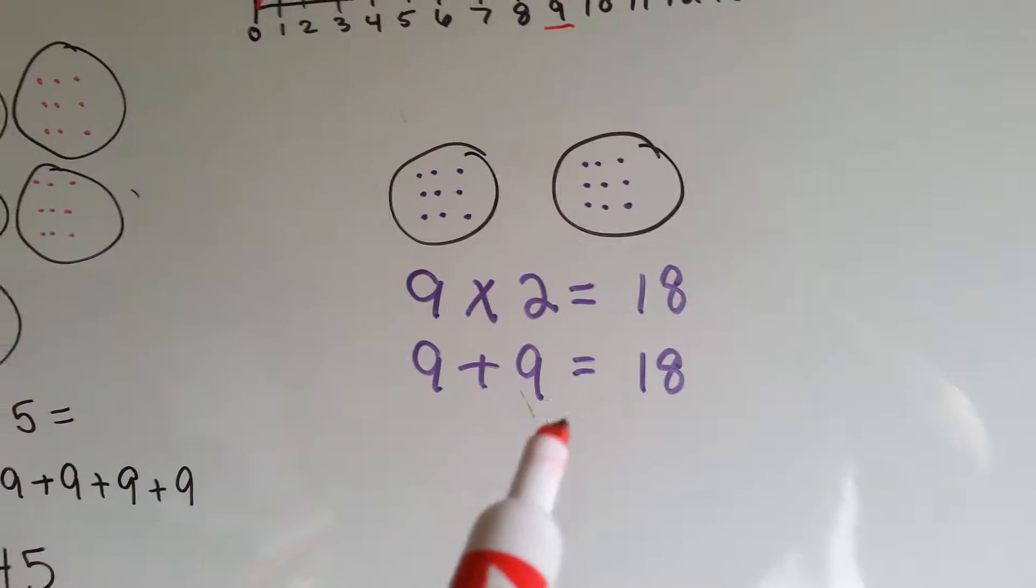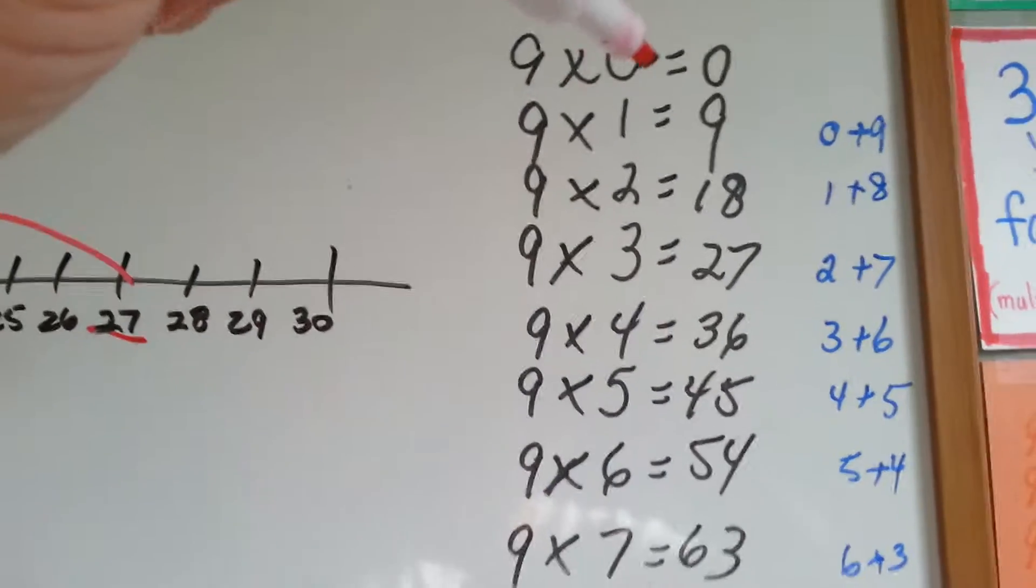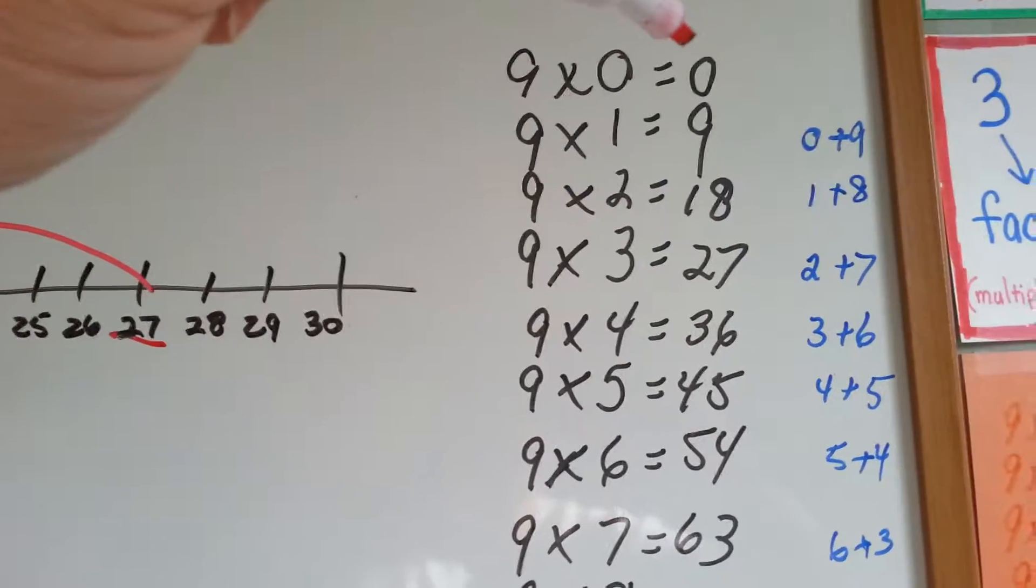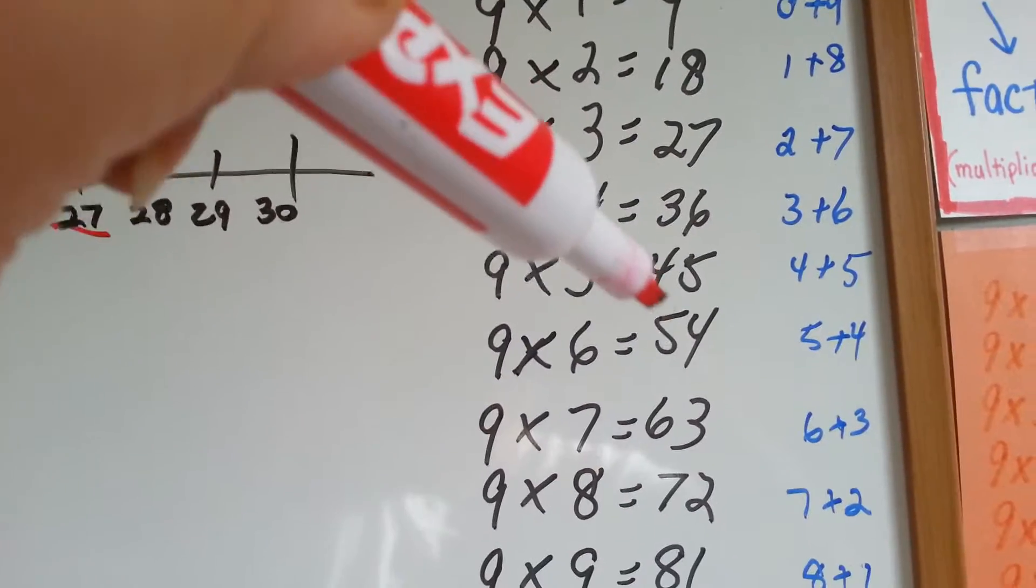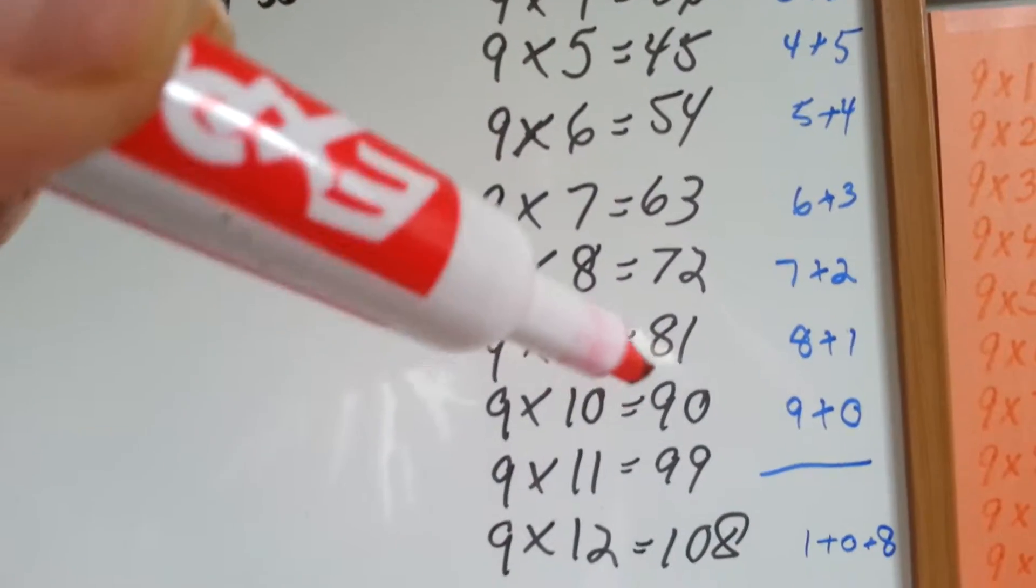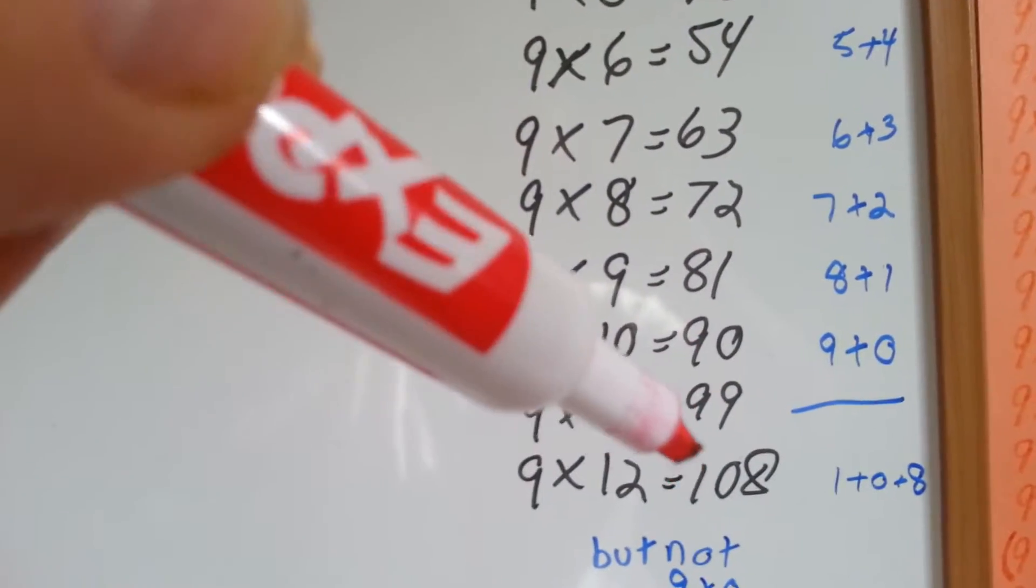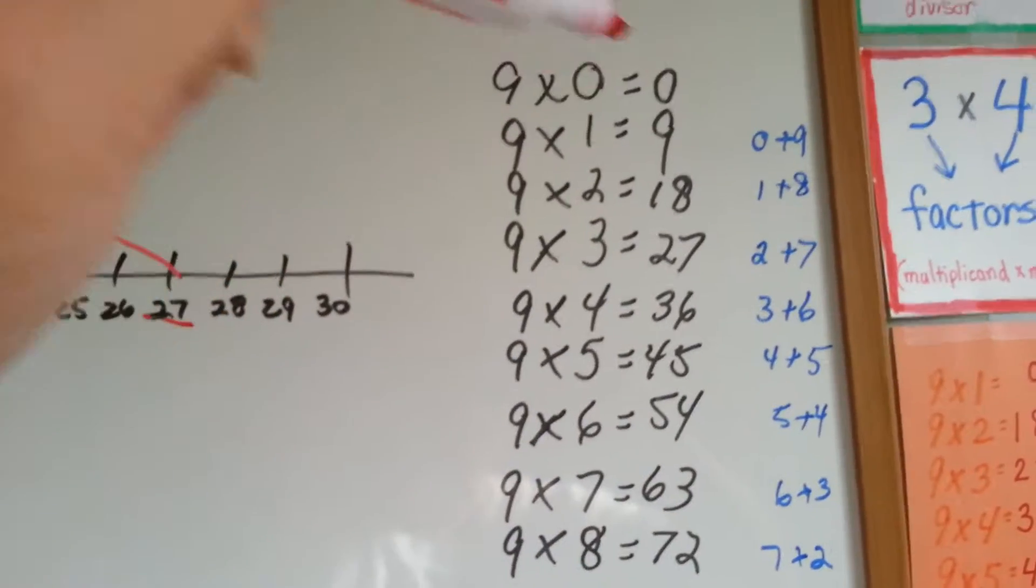Same thing as 9 plus 9. So when we look at the 9 times table right here, our answers are 9 times 0 is 0, 9, 18, 27, 36, 45, 54, 63, 72, 81, 90, 99, and 108 for 9 times 12. Now do you see what I did along the side here? This is one of the tricks.